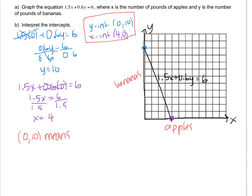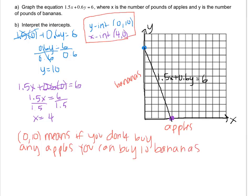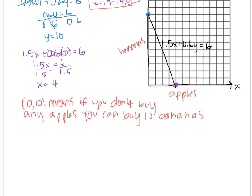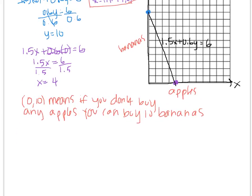So 0 apples means you don't buy any apples, and 10 bananas means 10 bananas. So 0,10 means if you don't buy any apples, you can buy 10 bananas.